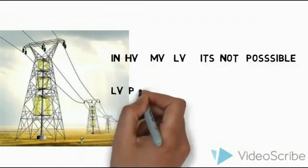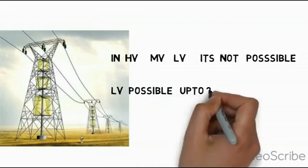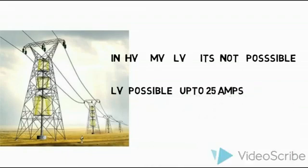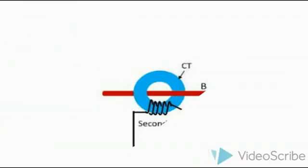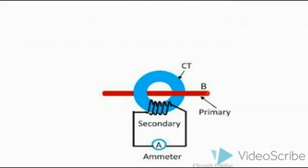At a low voltage level, it is possible to use the current transformer without breaking the main wire. The line acts as the primary, and the current transformer is used on the secondary side. The secondary current volume is less than 5A, and the value should be less than 2A.